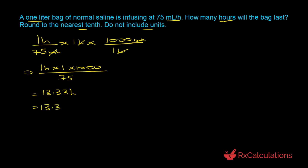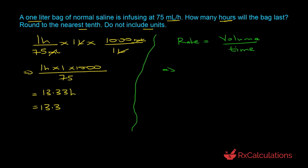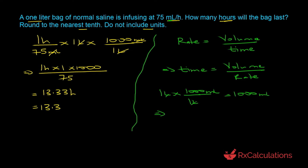The alternative approach is using the equation: flow rate equals volume divided by time. Rearranging gives time equals volume over rate. The volume is one liter, converted to 1000 milliliters. Substituting: time = 1000 milliliters ÷ 75 milliliters per hour. The milliliters cancel out, the hours go to the top, and you end up with 13.3.